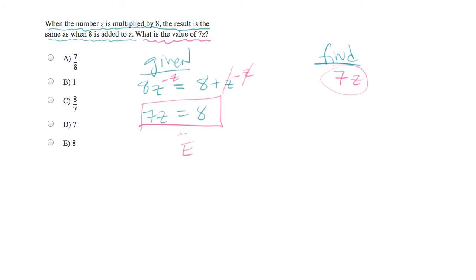And that is answer choice E. It would have been a mistake to try to solve all the way down for z, to get z equals 8 over 7, and then to try to find 7z equals 7 times 8 over 7 equals 8.